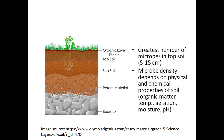We see the greatest number of microbes in the top soil, which is about 5 to 15 cm of the soil surface. Microbe density depends on physical and chemical properties of soil like organic matter content, temperature, aeration, moisture level, and pH of the soil. These factors determine the microbial density in the soil.